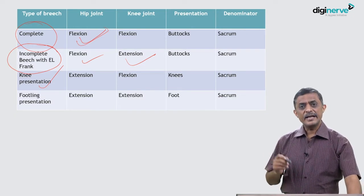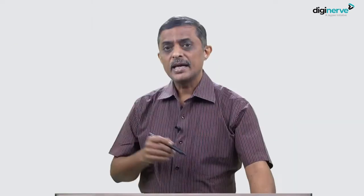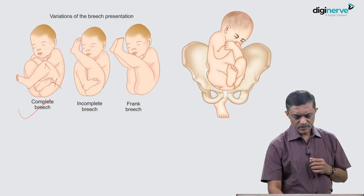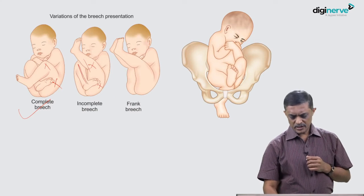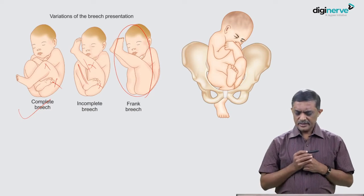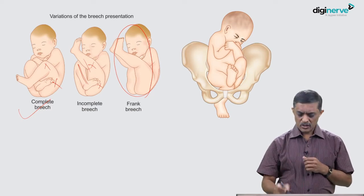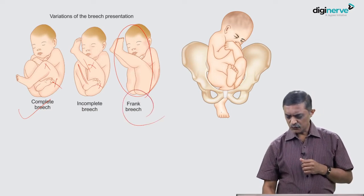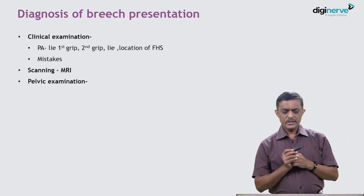To summarize the types: complete breech has both hip and knee flexed; frank breech has hips flexed and knees extended bilaterally; footling presentation has one or both feet presenting. The distinction is based on the degree of flexion and extension at the hip and knee joints, and whether it is unilateral or bilateral.